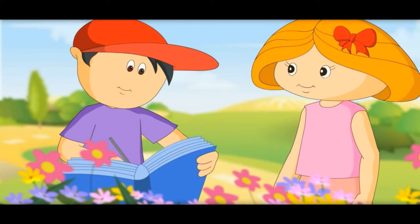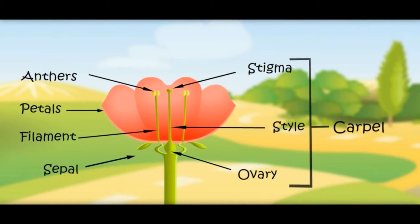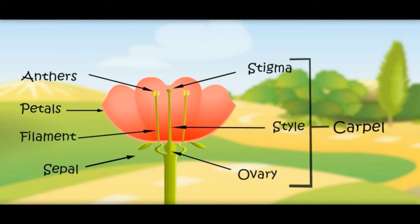Let us revise now. Male parts are anthers and filaments. Female parts are stigma, style, and ovary. Yes, when pollen falls on the stigma, it goes down to the ovary where a reaction happens and fruit is made. Now I can also make fruit from flowers — I would take the anther and put it on the stigma and fruit would be made.